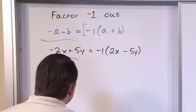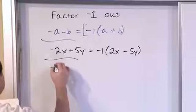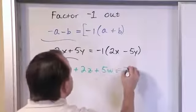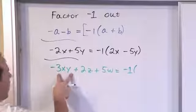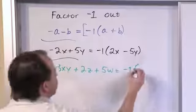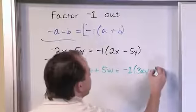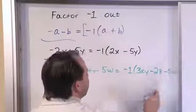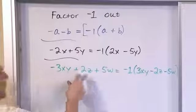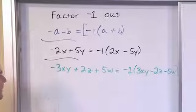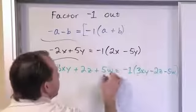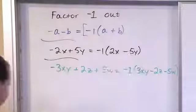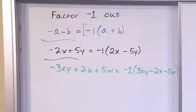One more example: negative 3xy plus 2z plus 5w — factor out a negative 1. Write negative 1 and open parentheses. Inside you'd need positive 3xy, negative 2z, and negative 5w. Check: negative 1 times 3xy gives negative 3xy; negative 1 times negative 2z gives positive 2z; negative 1 times negative 5w gives positive 5w. The pattern holds — when you factor out a negative 1, all terms flip their signs.